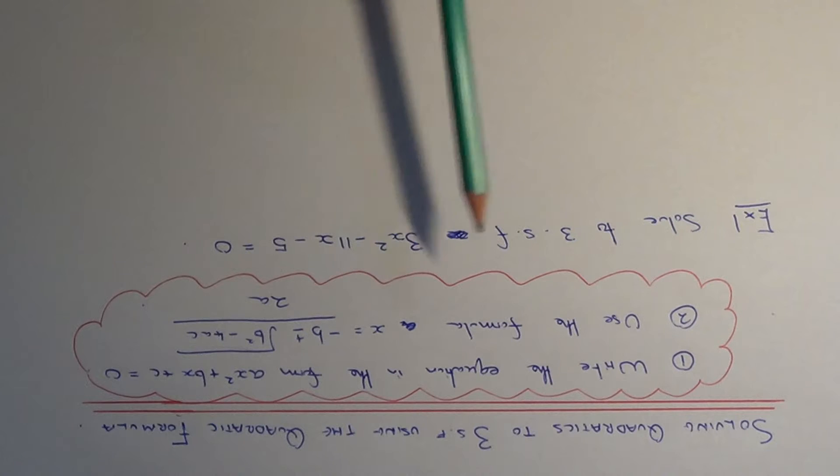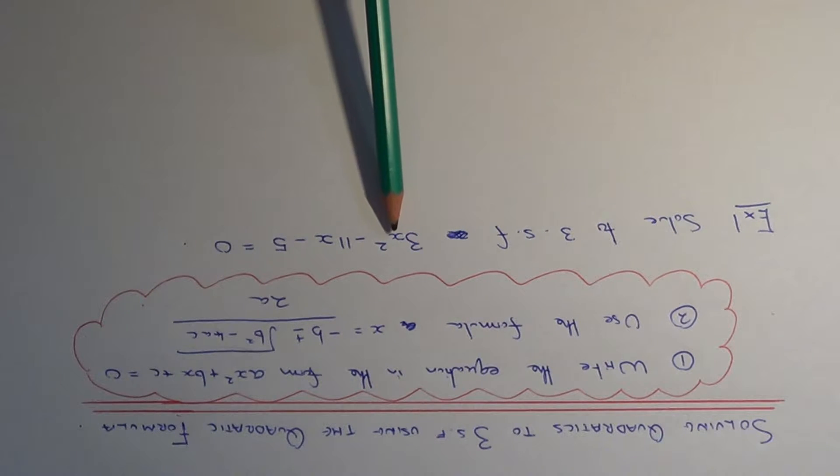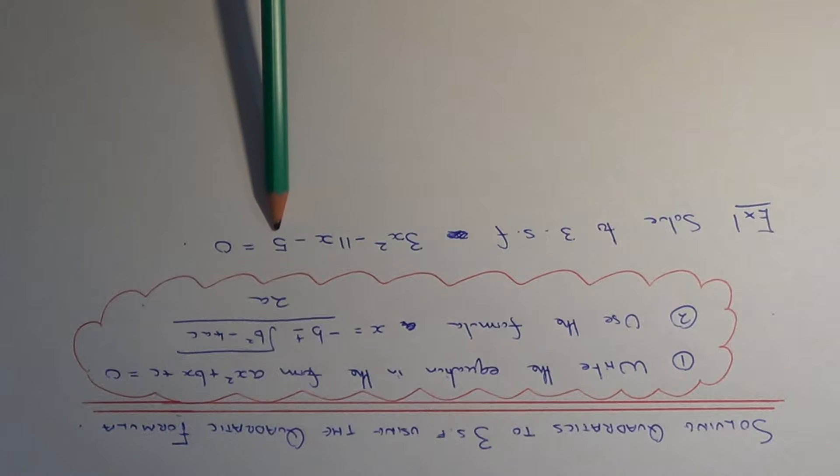Let's use this formula on the example here. We need to solve to three significant figures: 3x squared minus 11x minus 5 equals naught.